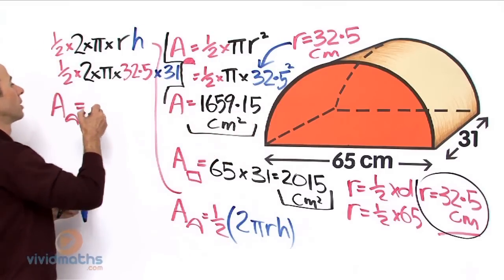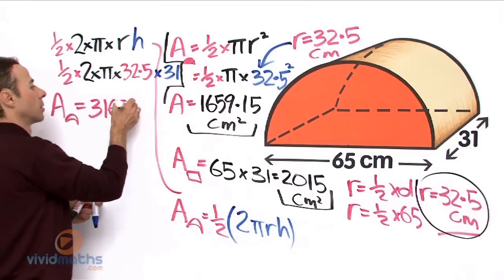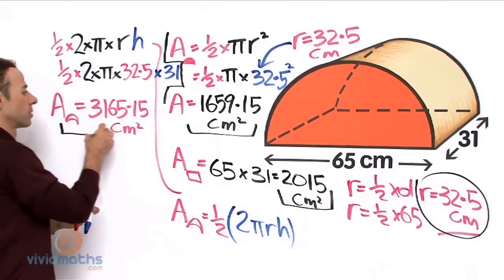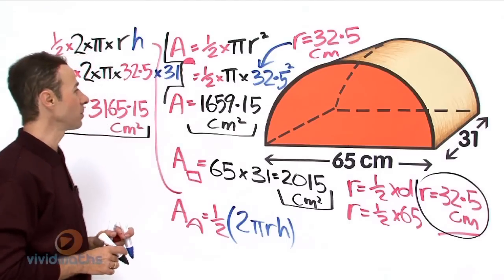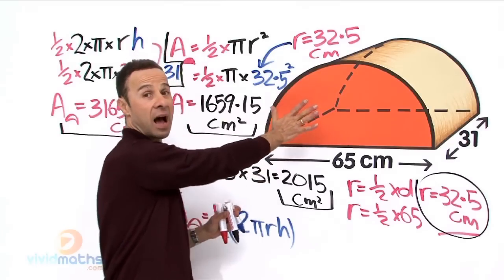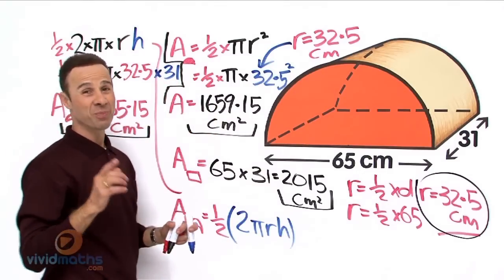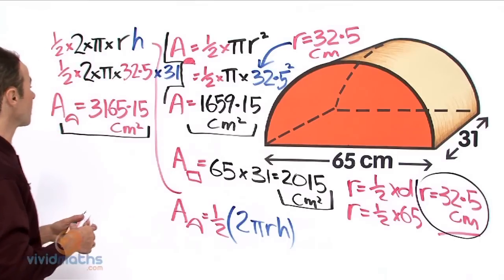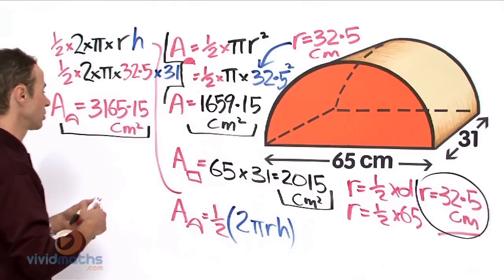Ok, now we need to add everything up, but before we add all those surfaces up we need to multiply the area for this orange bit over here by 2 because there is another half semicircle around the other side there. So remember we got 1659.15, we multiply that by 2 or we write it up twice. Let's do that, let's write it up twice, it's going to make it a lot easier. So let's add them all together, so we are adding this one here times 2, so we write that down twice.